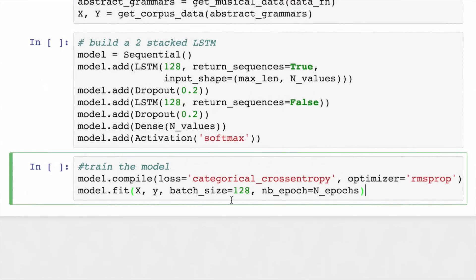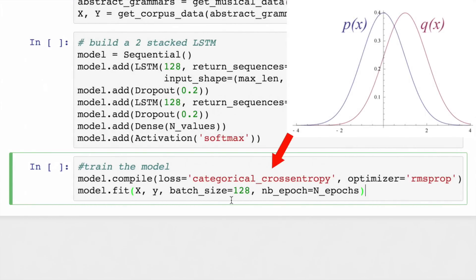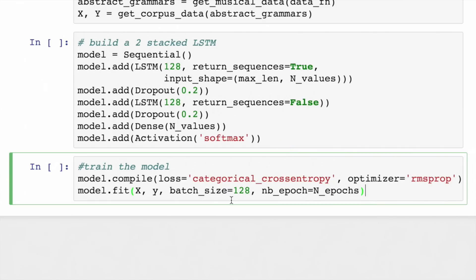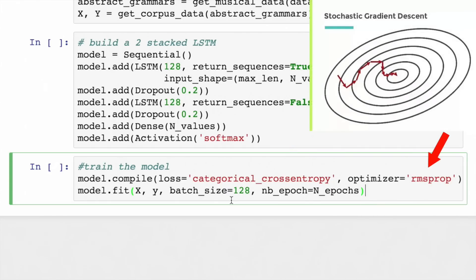We'll define our loss function as categorical cross entropy. The cross entropy between two probability distributions measure the average number of bits needed to identify an event from a set of possibilities. Since our data is fed in sequences, this measures the difference between the real next note and our predicted next note. We'll minimize this loss function using RMSprop, which is an implementation of stochastic gradient descent.